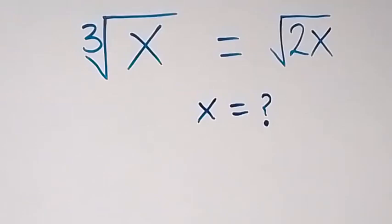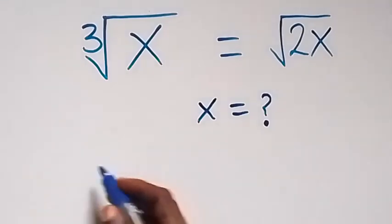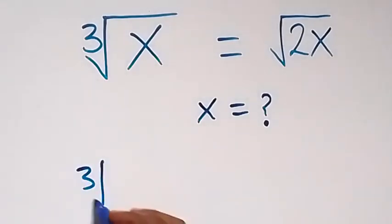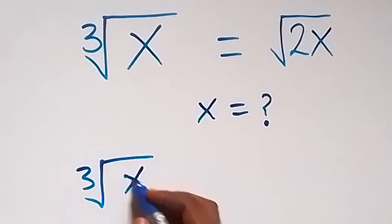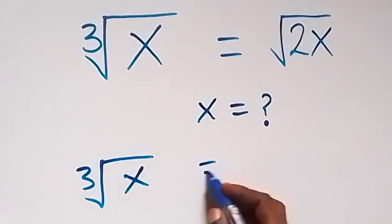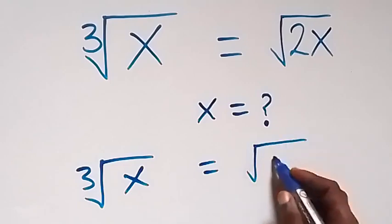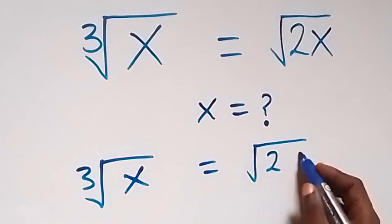Hello, you are welcome. How to solve for x in this nice math problem involving square root? From what is given, which is cube root of x equals to square root of 2x.